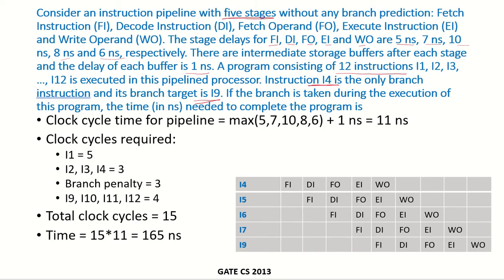If the branch is taken during the execution of this program, what will be the time in nanoseconds needed to complete the program? In a pipelined implementation, the clock cycle time is the maximum of the time required by each stage. So we take the maximum of 5, 7, 10, 8, and 6, which is 10, then add the interstage buffer delay of 1 nanosecond. The total clock cycle time is 11 nanoseconds.